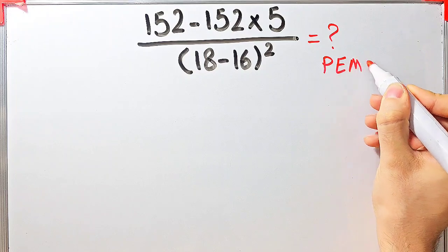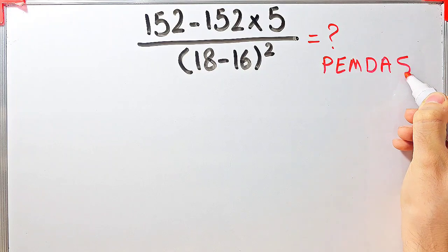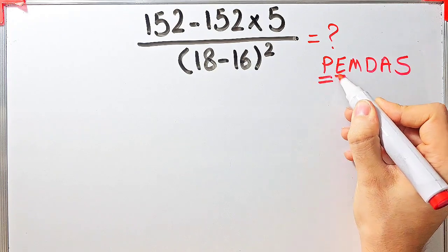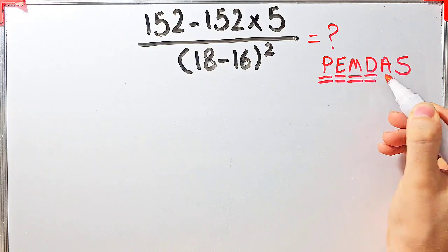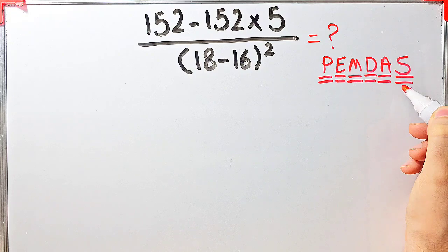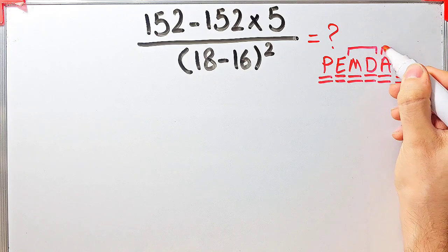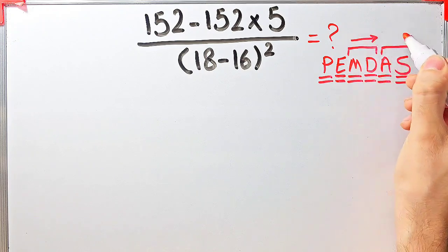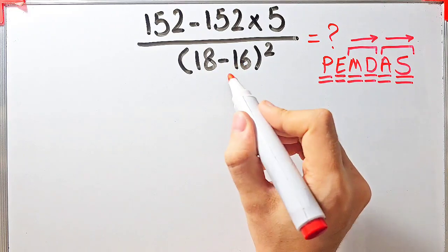PEMDAS shows the priority of the mathematical operations, and if you don't pay attention to this rule you get the wrong answer. P stands for parentheses, E stands for exponent, M stands for multiplication, D stands for division, A stands for addition, and S stands for subtraction. Multiplication and division have the same level of priority; addition and subtraction also have the same level of priority. When we have both in an expression, we start from the left. Let's simplify and solve this question step by step together.